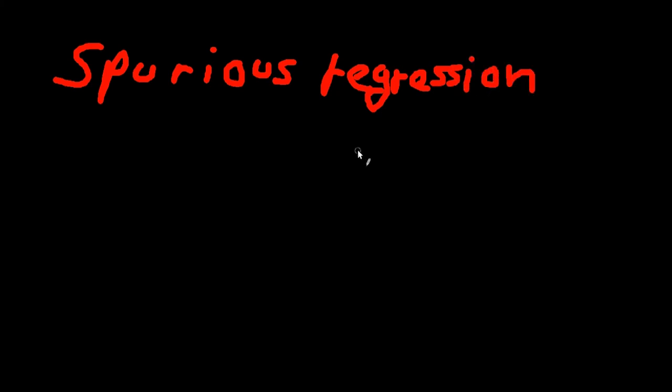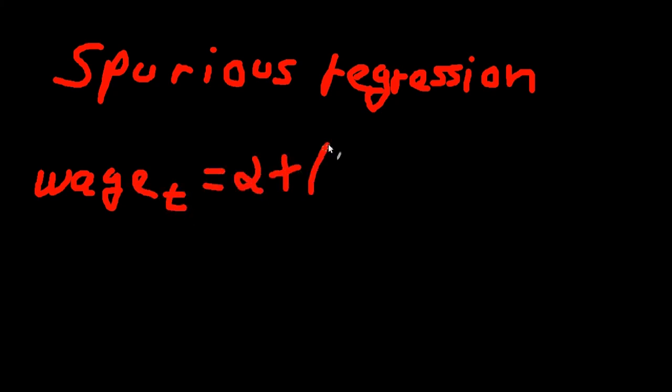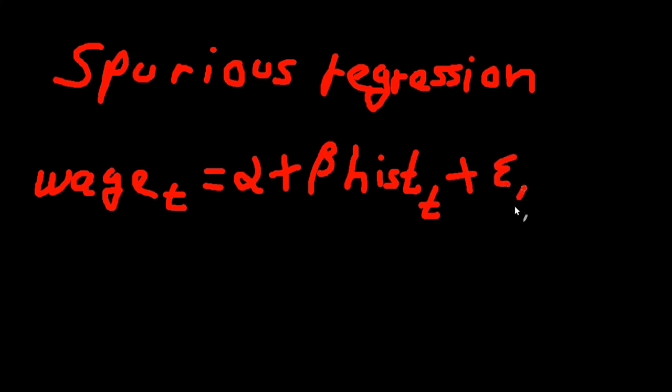In practice we call this spurious regression. Let's explain spurious regression with a simple example. We want to estimate the effect of the number of economic historians in the United States on wages in manufacturing in the United States. So our regression equation becomes: wage at time t is equal to alpha plus beta times hist, the number of economic historians at time t, plus epsilon t.